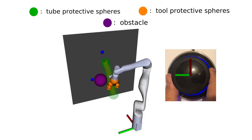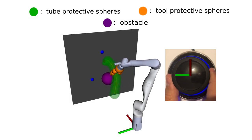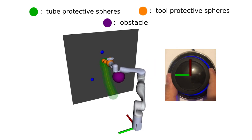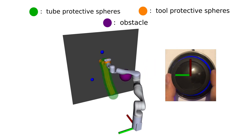Here you can see how the operator is guided to the target in the presence of a dynamic obstacle. Protective spheres are also placed on the tool so that the operator is not able to move the robot out of the tube in the direction of the obstacle.